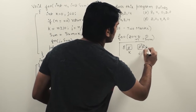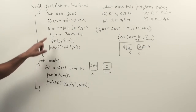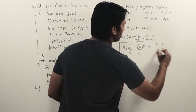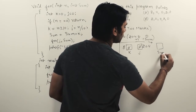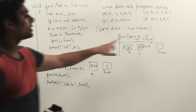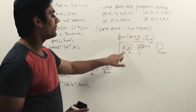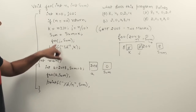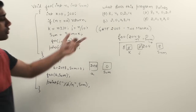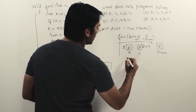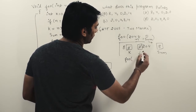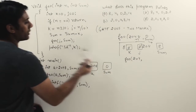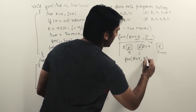Now sum is equal to sum plus k. The initial value of sum was 0 and k is 8, so sum is now 8. Then we call foo again with j and sum — that is, foo(204, 8).